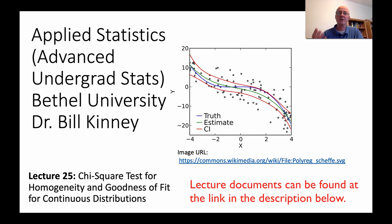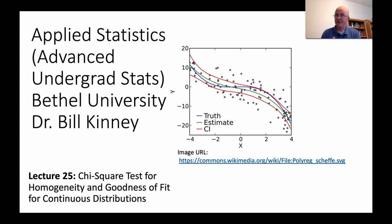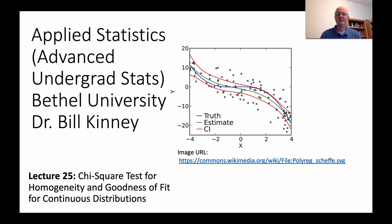It's our second and final lecture looking at chi-square tests. In lecture 24, we looked at chi-square tests for goodness of fit of discrete distributions, and then also testing independence of two categorical variables when doing random samples from a single population. Here we're going to look at chi-square tests for homogeneity when we compare two separate populations with two independent random samples. We'll also look at goodness of fit for continuous distributions.